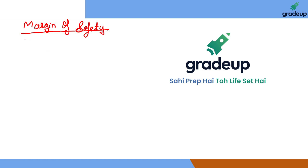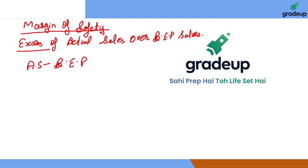It simply means the excess of actual sales over BEP sales. This is basically what we call margin of safety. So actual sales minus BEP sales equals margin of safety.